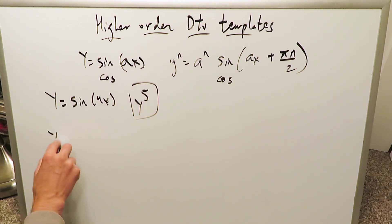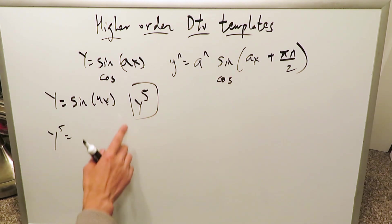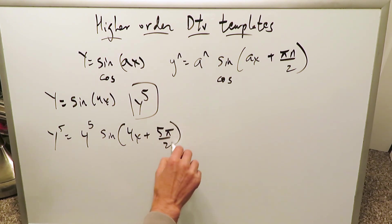I can use this template and I will. The fifth order derivative would be equal to a to the power of n. This right here is my ax. My a here is 4 to the power of n which is 5. Then you have sine. You'd have here 4x plus 5π/2 because n value here is 5 and the a value here is 4.